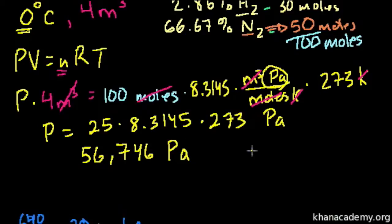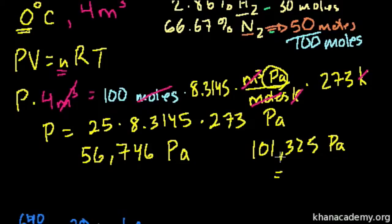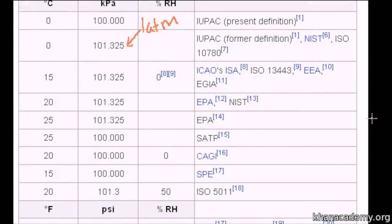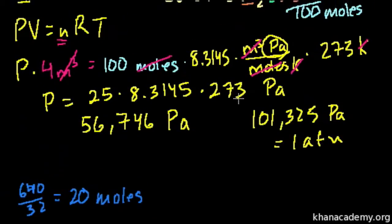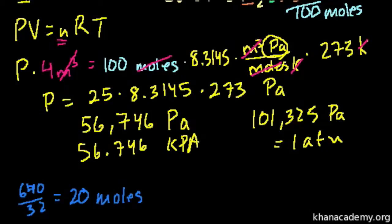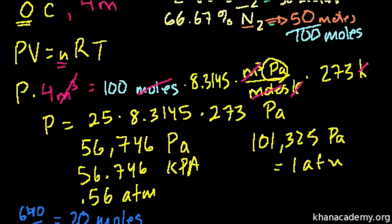The pascal is actually a very small amount of pressure — 101,325 pascals equals 1 atmosphere. So we can express this as 56.746 kilopascals, or dividing 56,746 by 101,325 we get approximately 0.56 atmospheres. That's the total pressure being exerted from all of the gases.